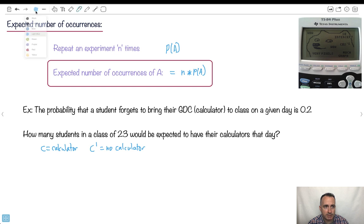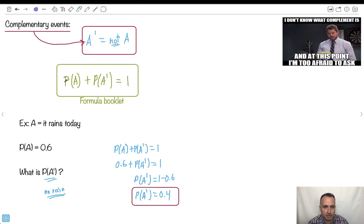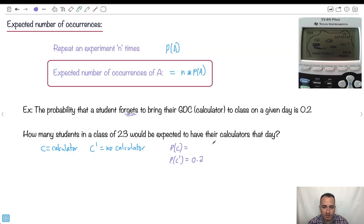Probability that you forget is 0.2. Maybe I'll say C is calculator and C prime will be no calculator. I can use this idea. What's the probability of C? I actually know probability of C prime - the probability that they don't have their calculator. Forgets, that's going to be 0.2. Then what's the probability that they do have their calculator? I use this idea: 1 minus 0.2 is going to be 0.8. So the probability of the student having their calculator on a given day is 0.8.